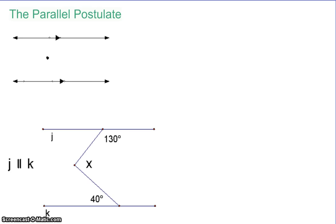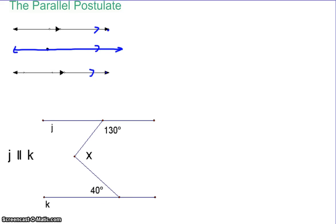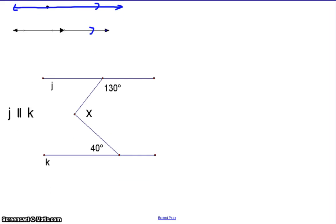That's where the parallel postulate comes in: if we have a point between two lines, we can draw a third line through that point parallel to the first one. Because the first and third are parallel, all three lines are parallel. Looking at the problem below — this is the crook problem — we want to find the measure of angle x, and we need to add in a third line parallel to the first two.